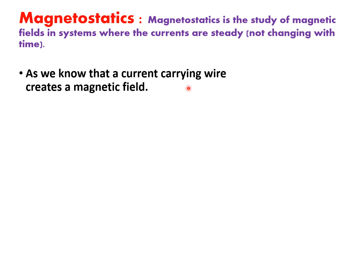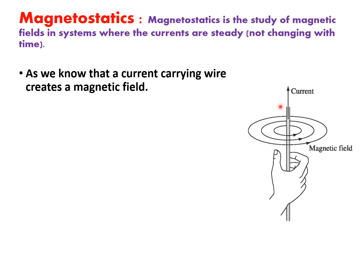As we know, a current-carrying wire creates a magnetic field. If the direction of the current is represented by the thumb, the fingers will tell us about the direction of the magnetic field.